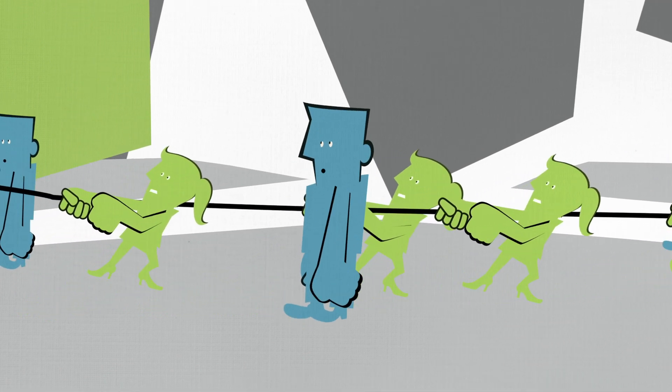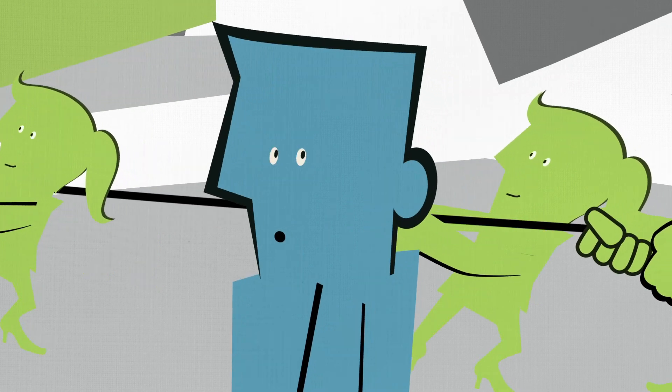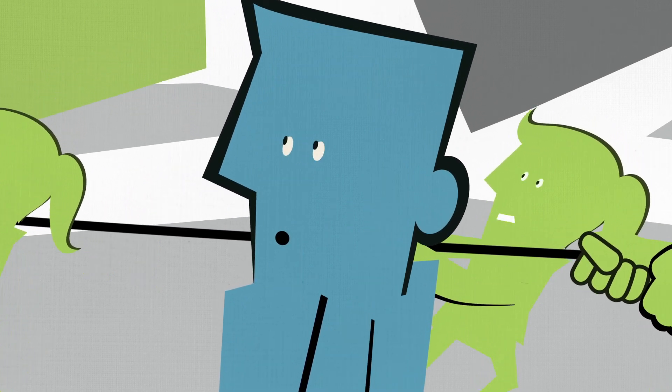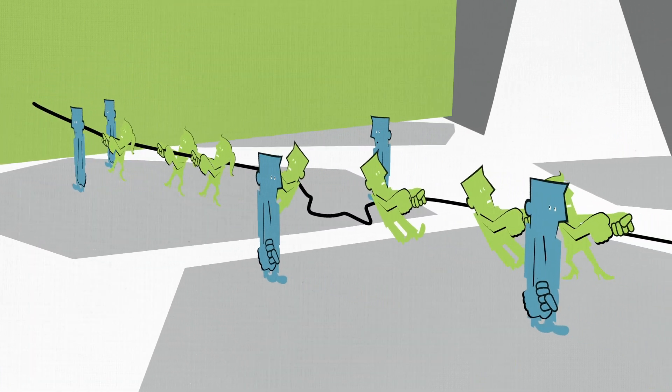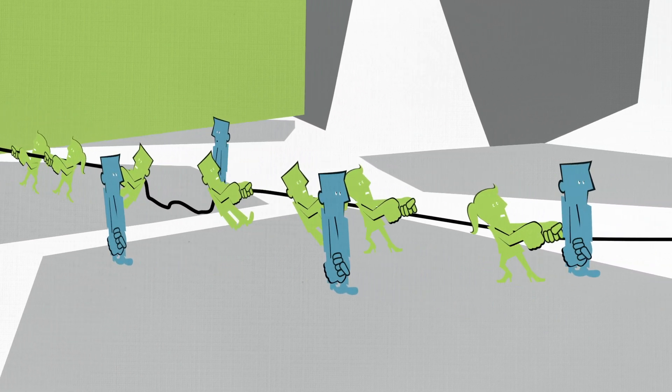But those hands aren't always in the right position. They're not always paying attention to grabbing the rope. So when you yell pull, you might only get some of the hands onto the rope.